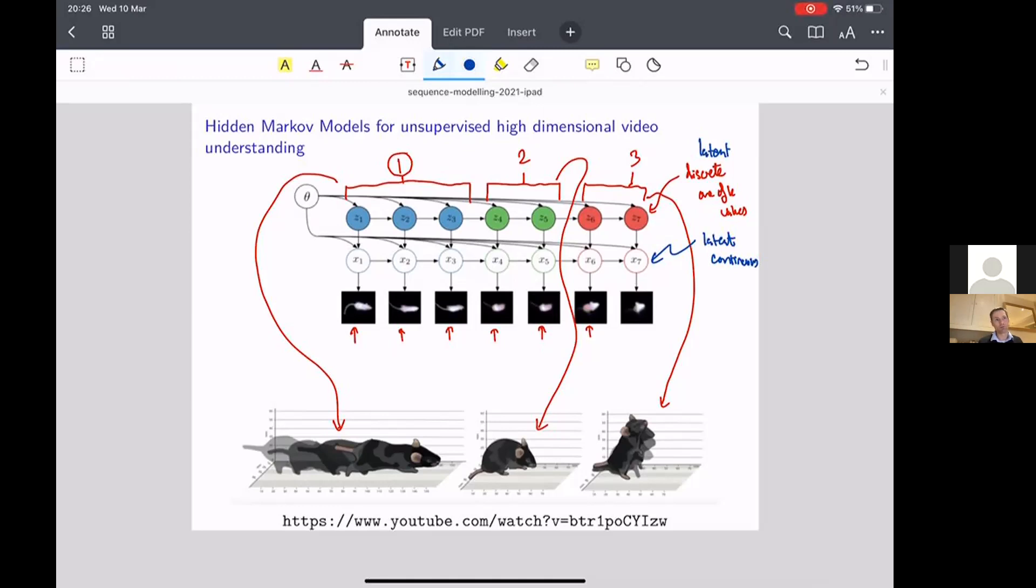And the ones below them are going to be continuous latent variables, much like those that are present in the linear Gaussian state space model. And depending on what action you're doing, the dynamics on these latent variables is going to be different. It's going to be modulated by the action that we're doing.